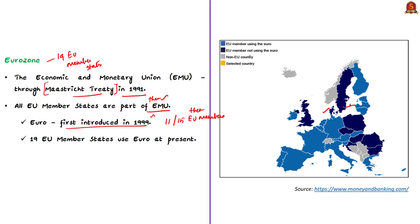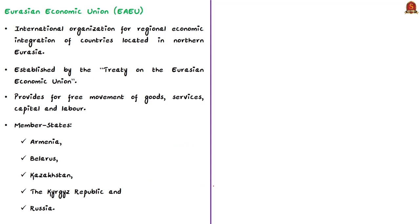Some EU members like Denmark and Sweden are not members of the Eurozone. The monetary policy in the euro area is in the hands of the independent Eurosystem, which comprises the European Central Bank (ECB) and the national central banks of the euro area member states.